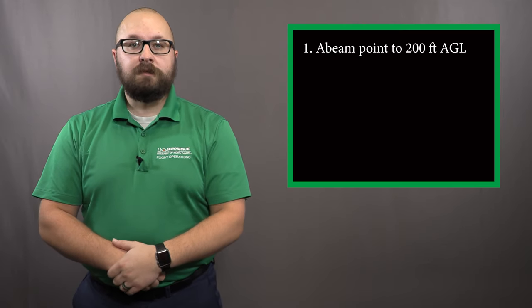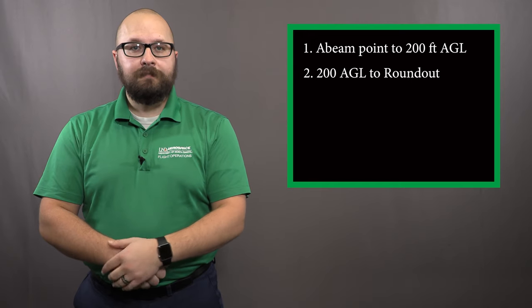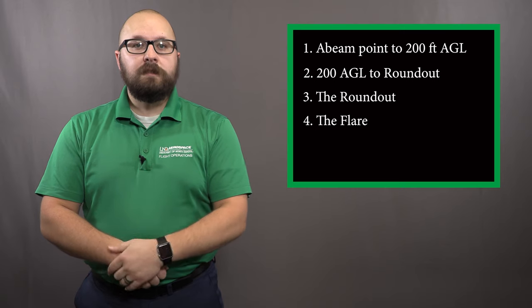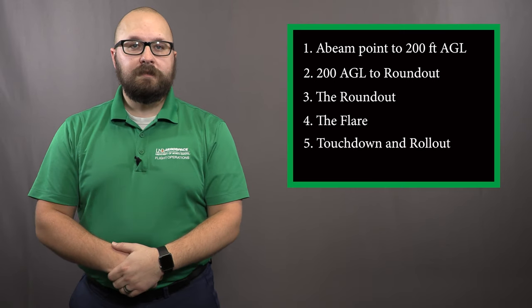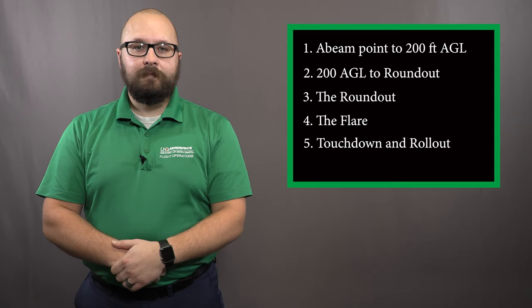They are abeam your aim point to 200 feet AGL, 200 feet AGL to the round out, the round out itself, the flare, and finally, touch down and roll out. Today we will focus on abeam our aim point to 200 feet AGL. Let's get started.